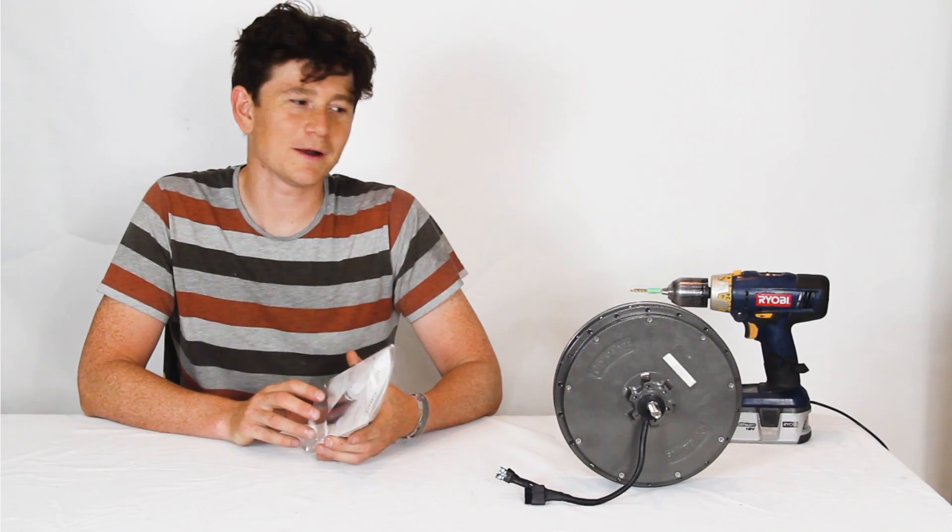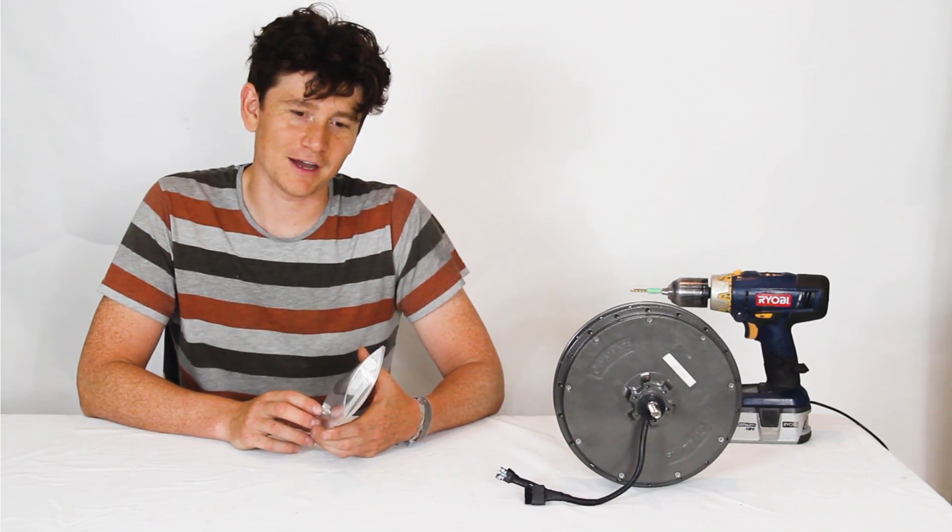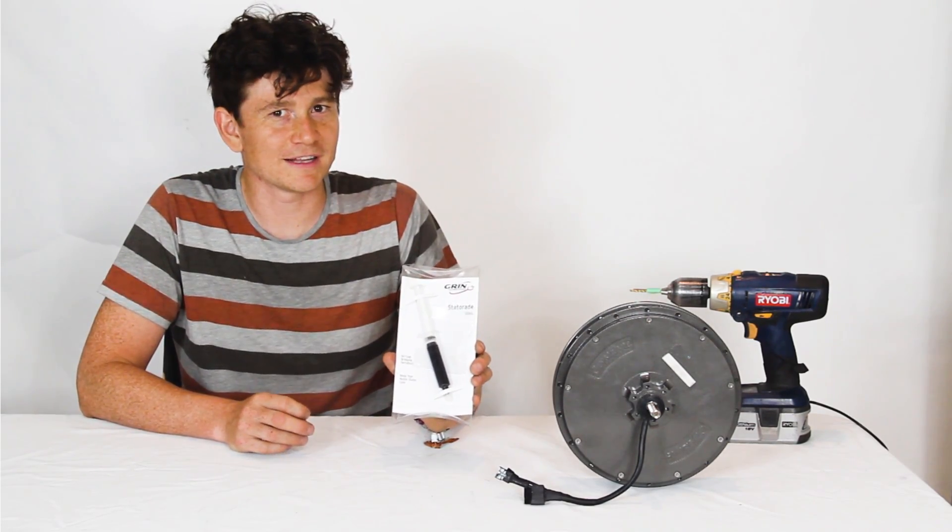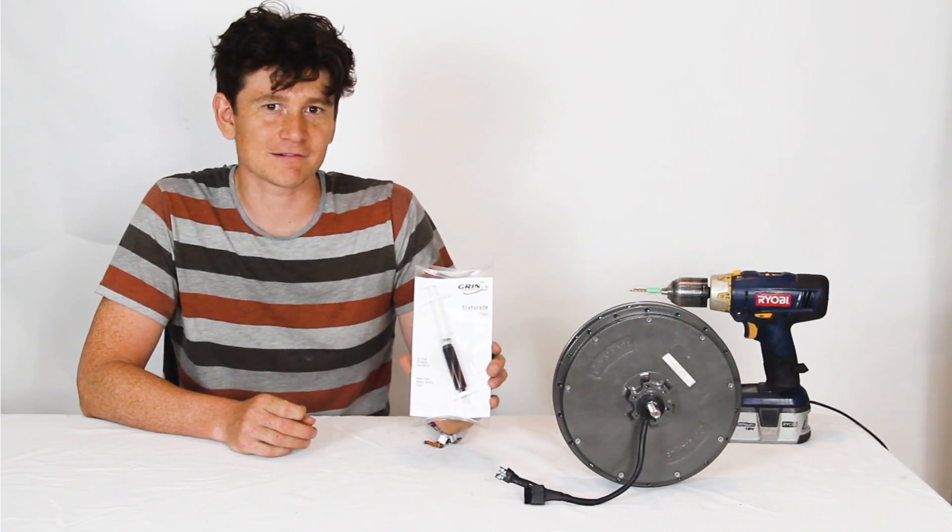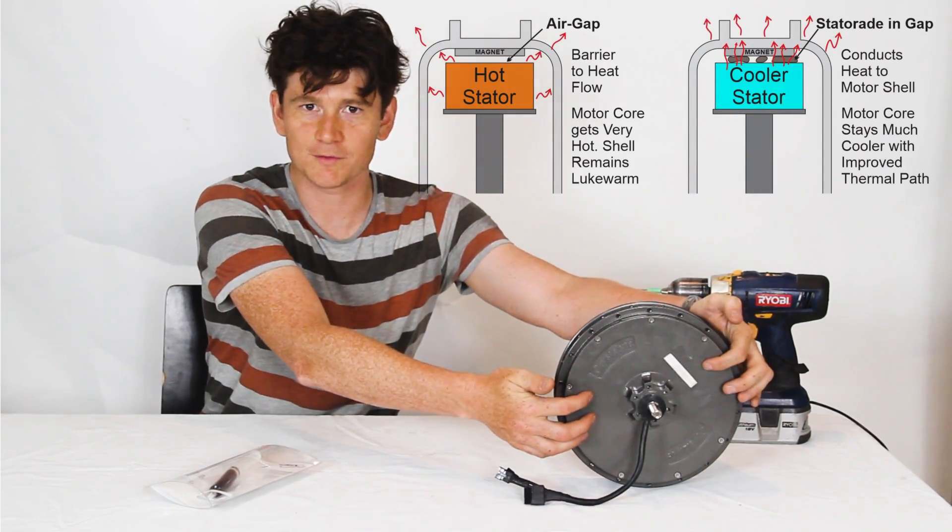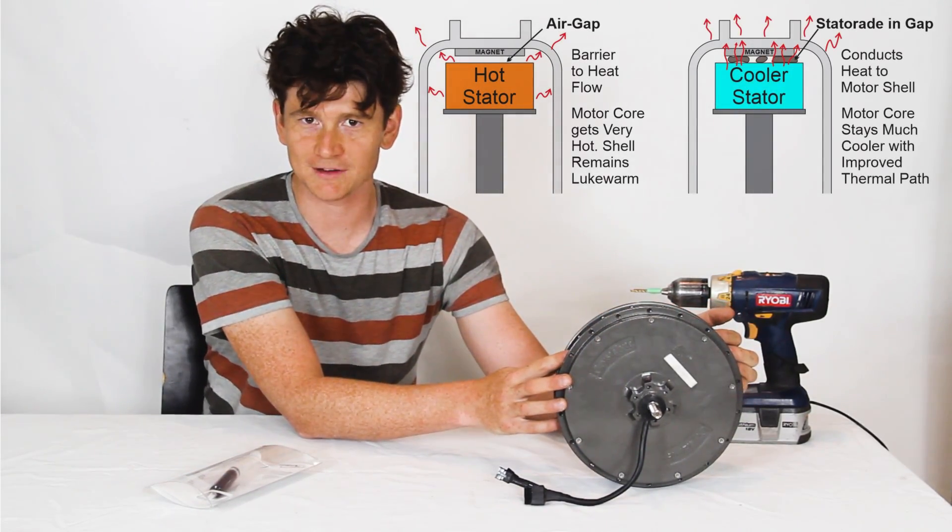In this short video I'm going to show one method of injecting statorade into a hub motor. Statorade is a novel ferromagnetic fluid that greatly improves the heat dissipating capability of direct drive motors by directly coupling the heat generated in the core of the motor to the outside shell so that it can get dissipated to ambient air.